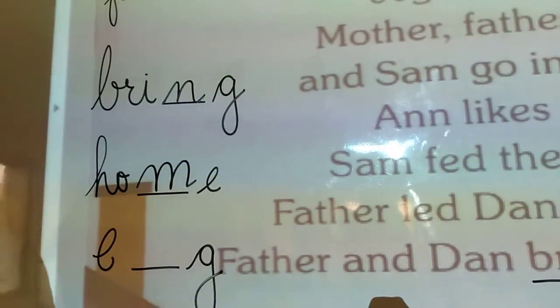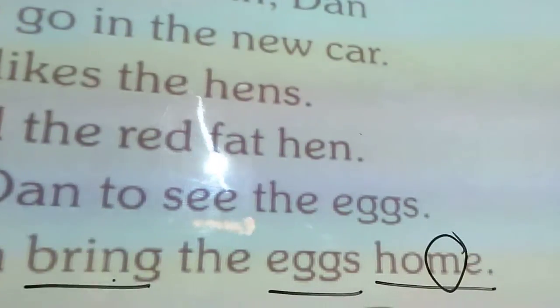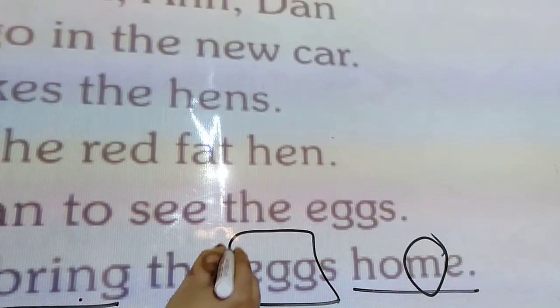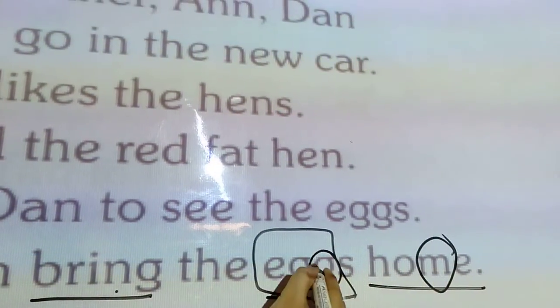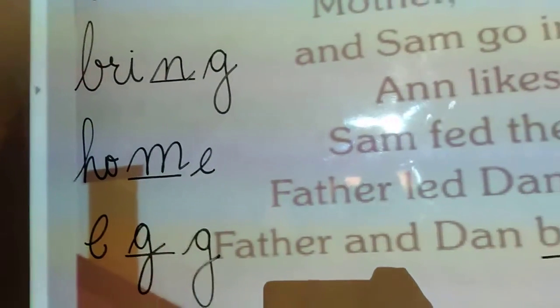Egg. What is the spelling of egg? E-double-G. Do G hai. E-G likha hai. One G missing hai. E-double-G. Egg.